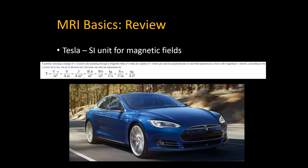A Tesla is not the fancy, fast, overpriced car — it is merely an SI unit for measuring magnetic fields. Most of the time we image at a field strength of 1.5 or 3 Tesla; those are the most common clinical magnet strengths.